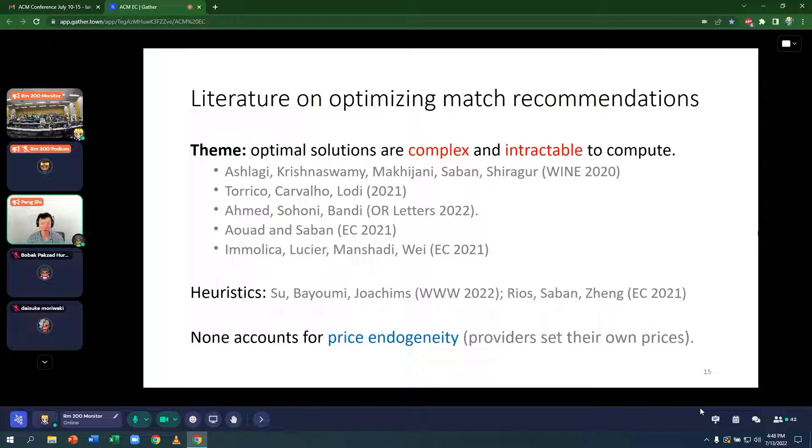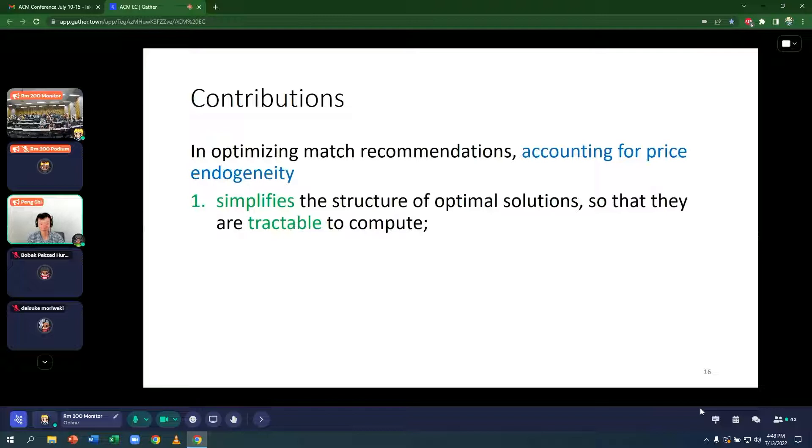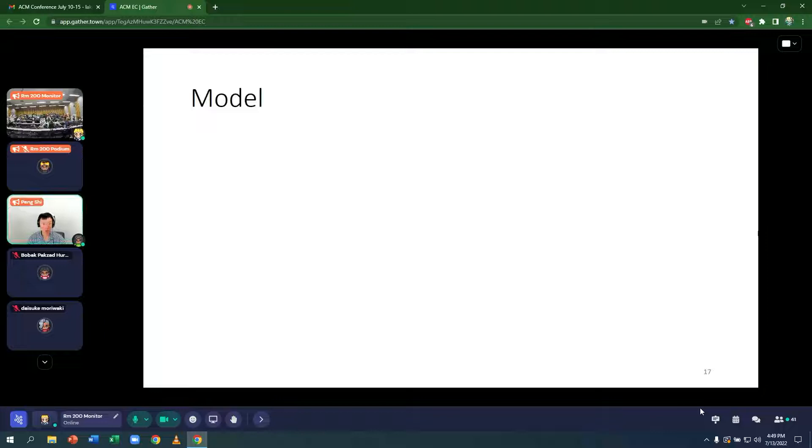The contributions of this paper is that in optimizing match recommendations, accounting for price endogeneity, allowing providers to set their own prices, actually simplifies the structure of optimal solutions so that they're tractable to compute and improves the social welfare. So having a more realistic model that makes our life actually easier and improves the results.